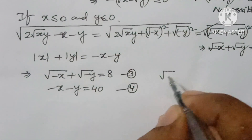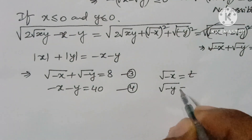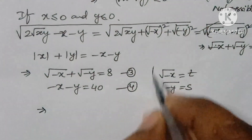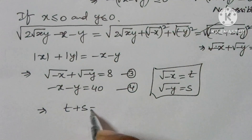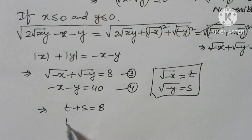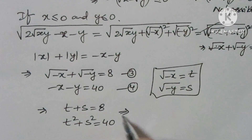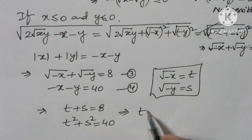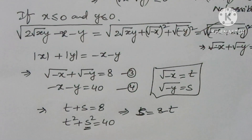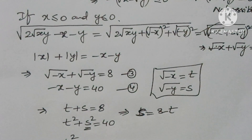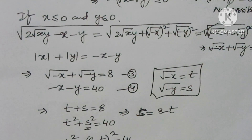Let √(−x) = t and √(−y) = s. Then t + s = 8, and t² + s² = 40. From t + s = 8, we get s = 8 − t. Substituting: t² + (8 − t)² = 40.